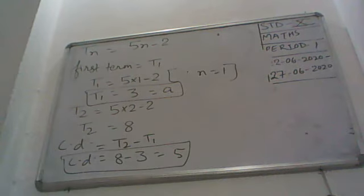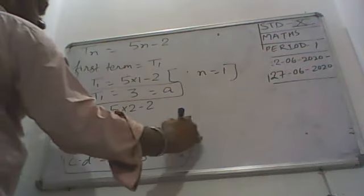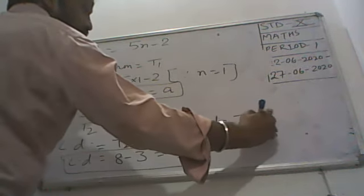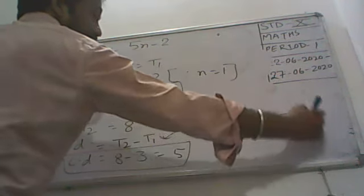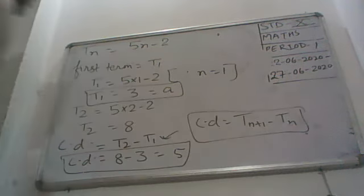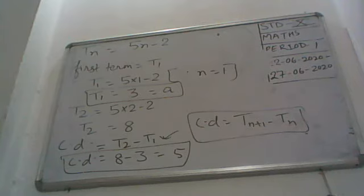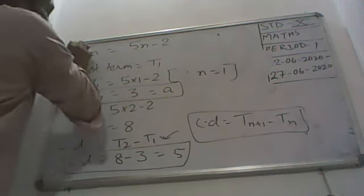We have read in our classes also what is common difference. Always remember this formula you have to learn: common difference is equal to TN plus 1 minus TN. This you have to remember, that common difference formula is this one only.